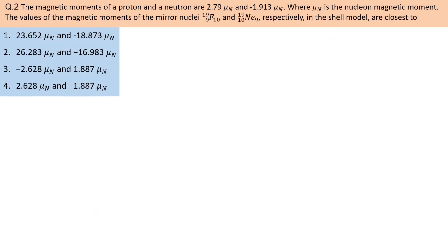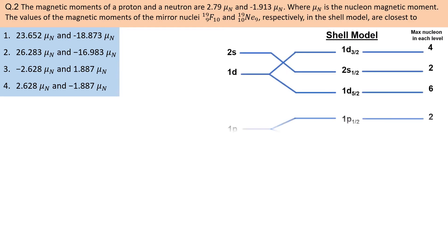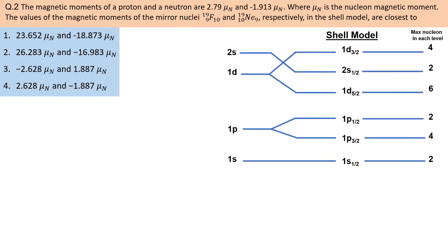The magnetic moments of a proton and a neutron are 2.79 and minus 1.913. The values of the magnetic moments of the mirror nuclei fluorine and neon respectively in the shell model are close to — yah question shell model par based hai. Shell model kisi nucleus ke angular momentum ko predict karne ka best model hai. Isi ki help se fluorine aur neon mirror nuclei ke magnetic moment calculate karne hain.